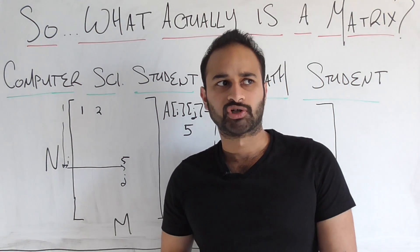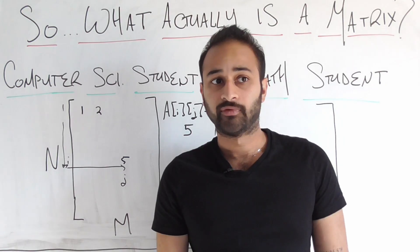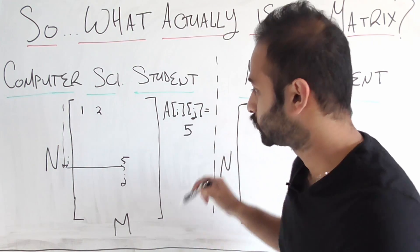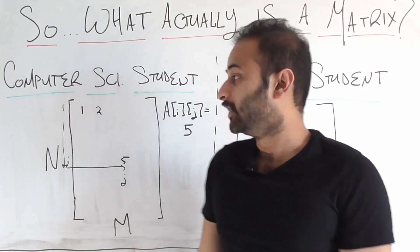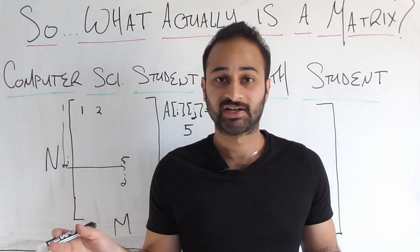What kind of things do computer science students care about with matrices? Well, they care a lot about the speed of various operations on matrices. For example, if I want to access an element like this in the matrix, how long does that take? If I want to add one matrix to another matrix, how long does that take?